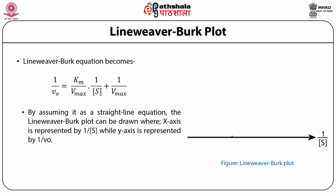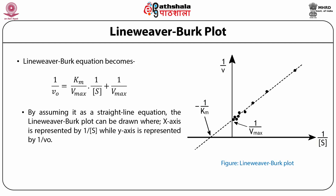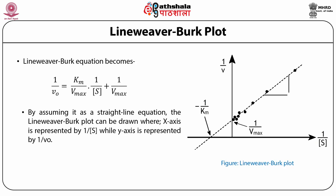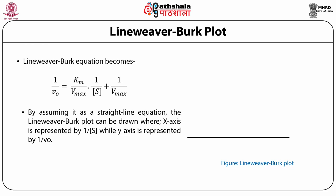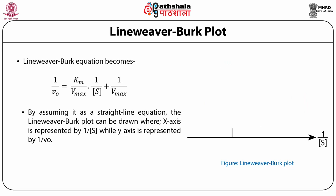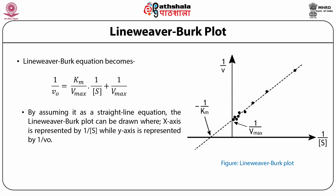An important point to remember is that −1/Km does not represent a negative value. It only represents that −1/Km is before zero on the X-axis. For example, if −1/Km has a value of −2, then setting −1/Km = −2, the negatives cancel, so 1/Km = 2. Therefore the negative sign written before −1/Km can be ignored.